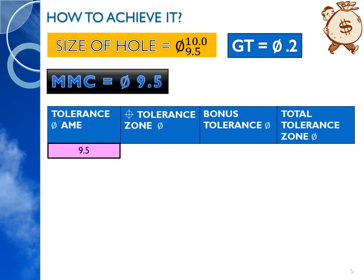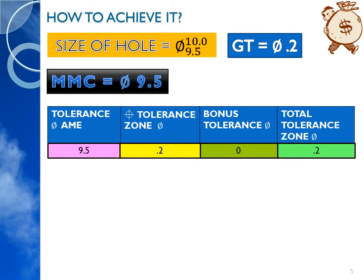If the part is manufactured at diameter 9.5, the position tolerance available from the feature control frame is a cylindrical tolerance zone of 0.2, and the bonus tolerance at this size is 0. As per Rule 1, perfect form at MMC — so when the part is produced at MMC, there is zero bonus tolerance. Form means perfect flatness, straightness, circularity, and cylindricity. Therefore, total tolerance available will be 0.2.